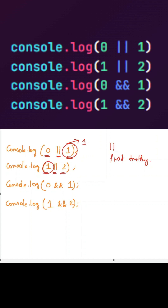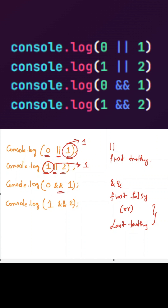Here we are using the OR operator between two truthy values — it will return the first truthy value, so it will return one to the console. Now for the AND operator: it will return the first falsy value, or if used between two truthy values, it will return the last truthy value. Here we are using the AND operator between a falsy value and a truthy value, so it will return the first falsy value, which is zero.